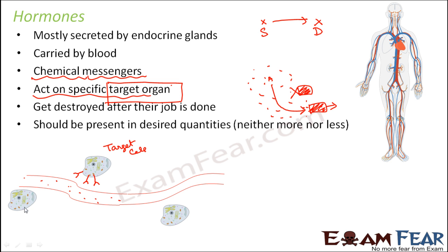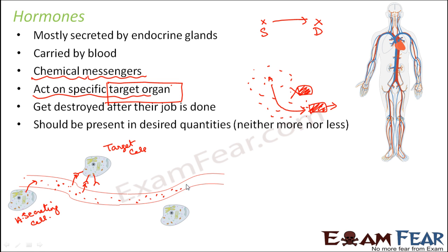Let us assume this is the hormone secreting cell — it is actually producing hormones, and these hormones will flow through the blood. As soon as it reaches the target region, it will find receptors present on that target cell. The hormones will actually tend to stick to these receptors, and that is how they convey information from the source to the destination — the target cell. If a cell is not a target cell, it will not have receptors for this particular hormone, so those hormones will just pass by and that cell will remain unimpacted. Hormones will only attack target cells, and they recognize target cells by the presence of receptors on them.